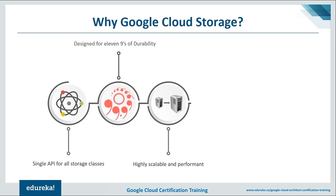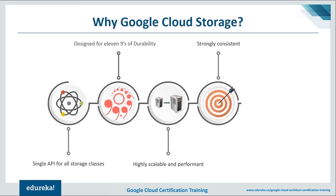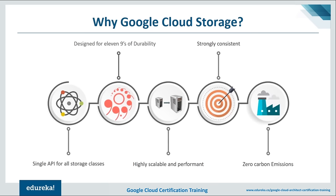With multi-regional storage, your data is maintained in geographically distinct locations. It is highly scalable and performant — Google Cloud Storage is practically infinitely scalable whether you are supporting a small application or building a large exabyte-scale system. It is strongly consistent: when a write succeeds, the latest copy of the object is guaranteed to be returned to any GET globally.